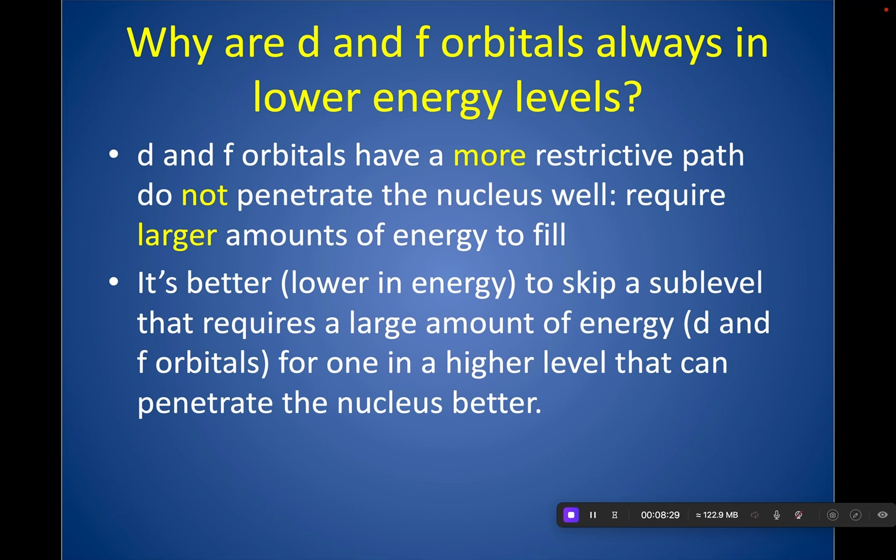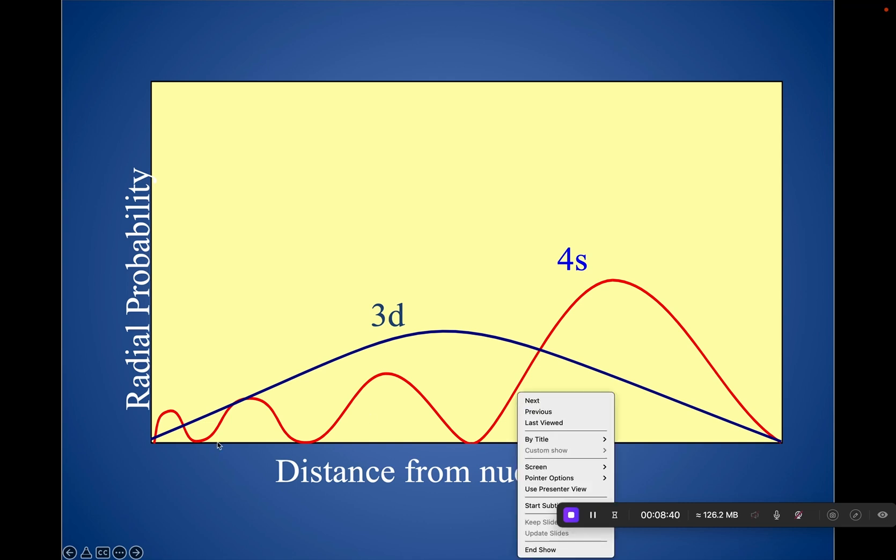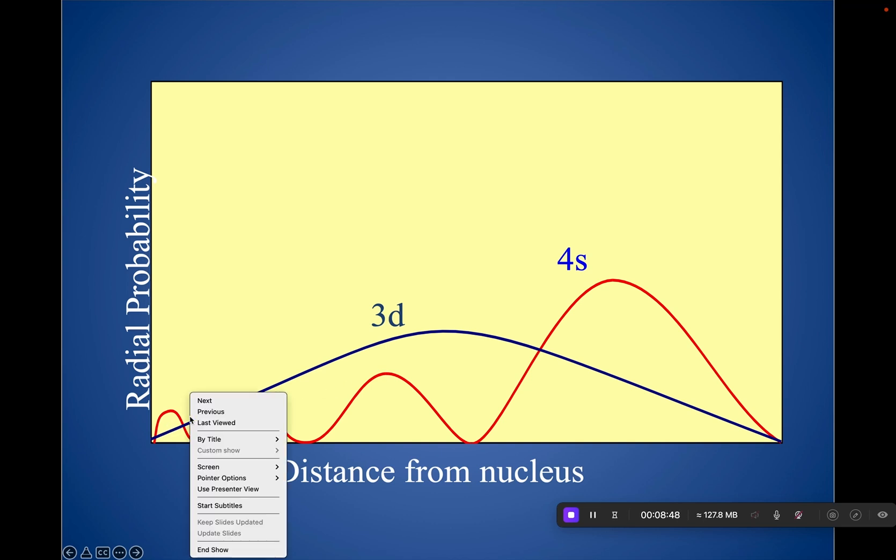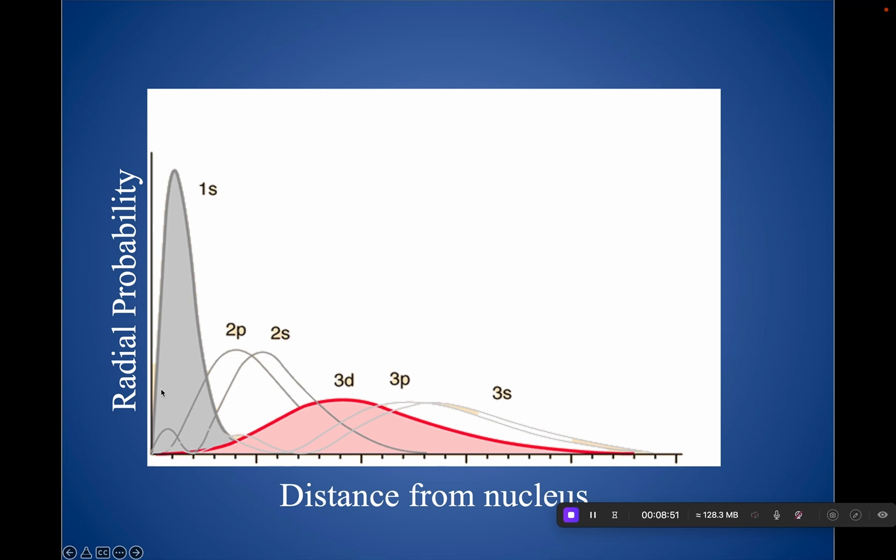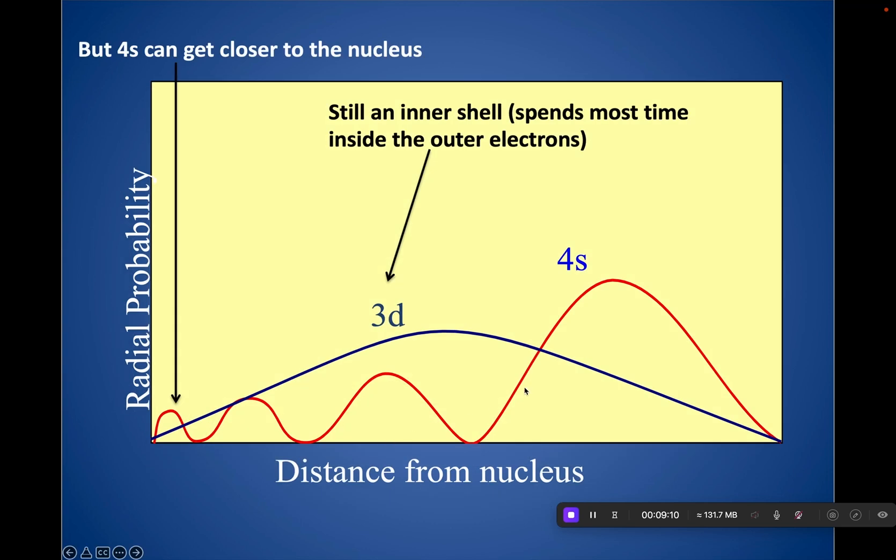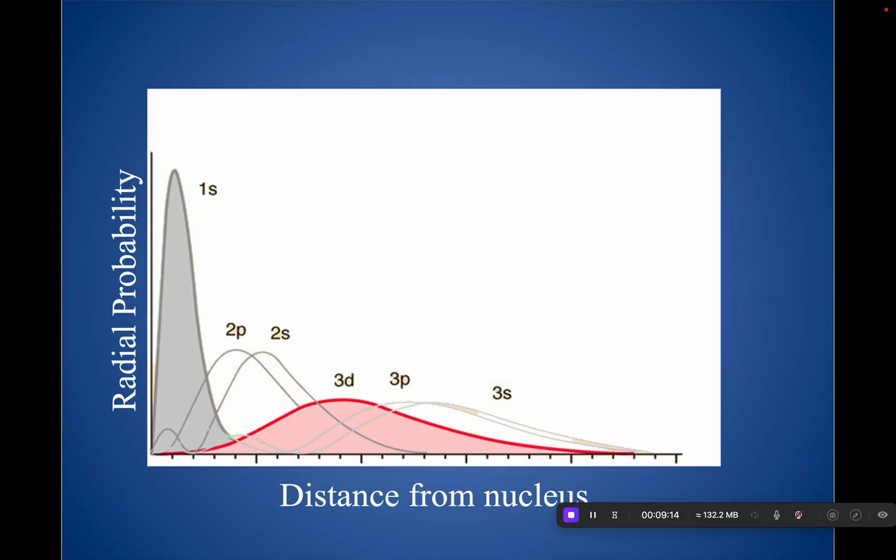The D and F orbitals actually have a much more restrictive path and don't penetrate the nucleus as well. They take a lot more energy to fill, which is why we fill 4S before filling 3D. So here's showing 4S can actually get closer to the nucleus than 3D can when we're talking about very short distances. Another way that I like to view this is why does 4S get filled before 3D? Because if I'm trying to put electrons in 3D, notice that I'm putting it in an area where there's already a lot of electrons. And what do electrons do with each other? They repel each other. So it makes sense that it's more likely to fill 4S, which on average is going to be further out from the nucleus most of the time but can penetrate the nucleus better at times than going in and putting electrons in a place where there's already a lot of electrons and would repel each other.